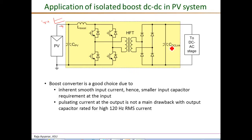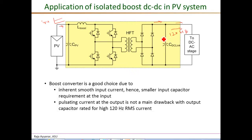The disadvantage of a boost-derived topology is at the output stage, where the current is pulsating. Normally, a large capacitance is needed to support this pulsating current and provide a smooth DC output. In the PV application, this is not a major problem because this capacitor already needs to be large to support the 120 Hz current component corresponding to the difference between instantaneous AC power and the desired smooth DC power. So the high frequency ripple requirement does not add significant additional burden.